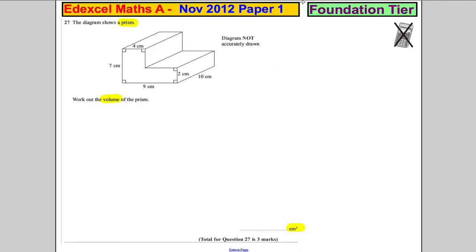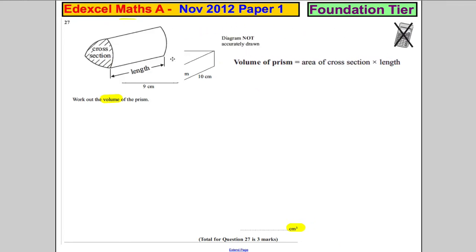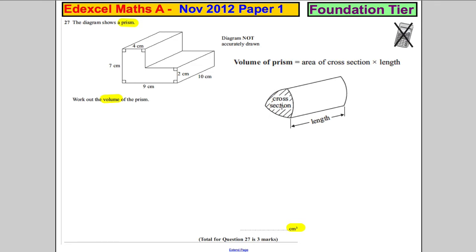The first thing you should think of is the formula booklet. There was something about a prism—it told you the formula. The volume of a prism is the area of the cross-section, so you can work out the area.